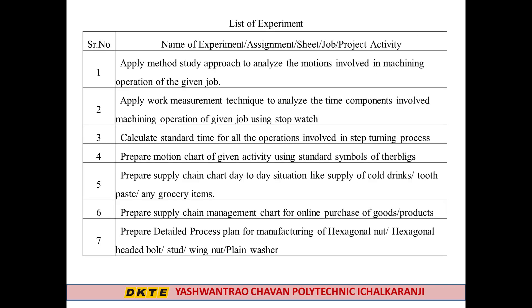This subject has 15 experiments. The first is to apply method study approach to analyze the motions involved in a machining operation. The second is to apply work measurement techniques to analyze time components in a machining operation using a stopwatch. The third is to calculate standard time for all operations in a step turning process. The fourth is to prepare a motion chart using standard symbols. The fifth and sixth experiments involve preparing supply chain charts for daily situations like supply of cold drinks, toothpaste, or grocery items, and for online purchase of goods.